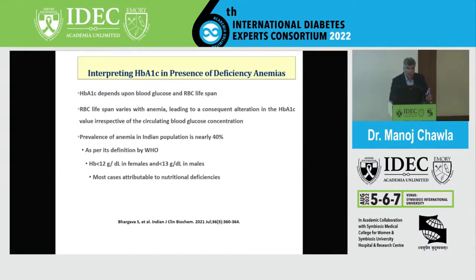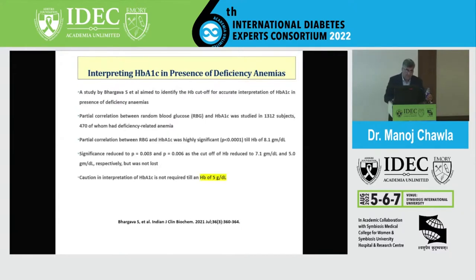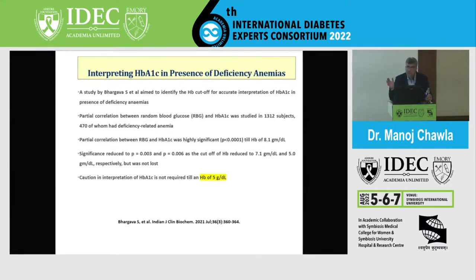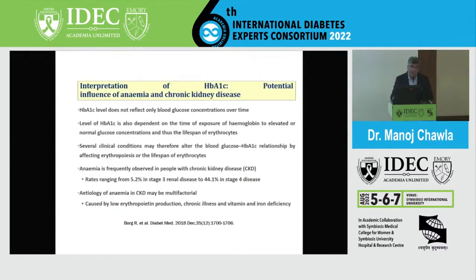As per the WHO definition, anemia is Hb less than 12 in females and less than 13 in males. Significant numbers of diabetic patients in many clinic populations fall into the anemia segment. However, studies by Bhargava et al. suggest that though anemia may affect HbA1C, until an Hb level of 5, it doesn't have clinical significance — raising the question of how much anemia actually affects modern HbA1C assays.